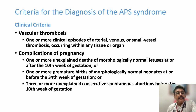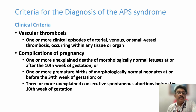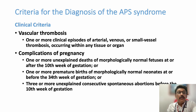The clinical criteria include vascular thrombosis — one or more clinical episodes of arterial, venous, or small vessel thrombosis occurring within any tissue or organ. Complications of pregnancy include: one or more unexplained deaths of a morphologically normal fetus at or after the 10th week of pregnancy; one or more premature births of a morphologically normal fetus at or before 34th week; or three or more unexplained consecutive spontaneous abortions before the 10th week of gestation. These are the common pregnancy-related problems in APS.